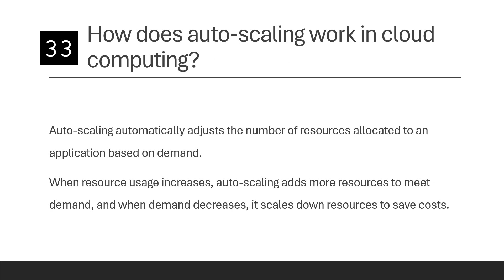How does autoscaling work in cloud computing? Autoscaling automatically adjusts the number of resources allocated to an application based on demand. When resource usage increases, autoscaling adds more resources to meet the demand, and when demand decreases, it scales down to save cost.